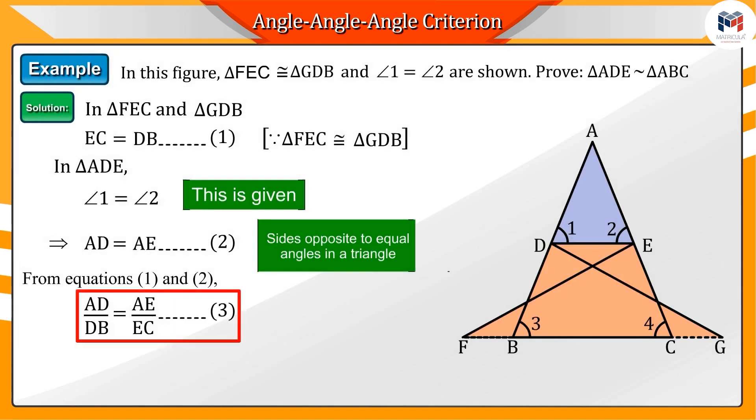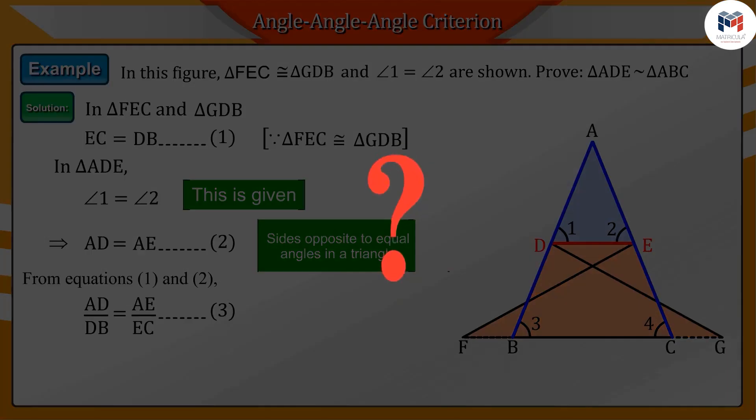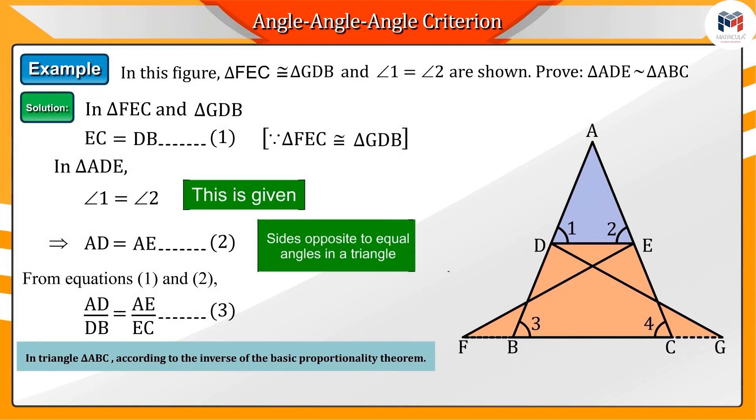Equation 3 tells us that the line DE divides the sides AB and AC of triangle ABC into equal ratios. What do you understand from this? According to the inverse of the basic proportionality theorem, we can say that the lines DE and BC are parallel lines.